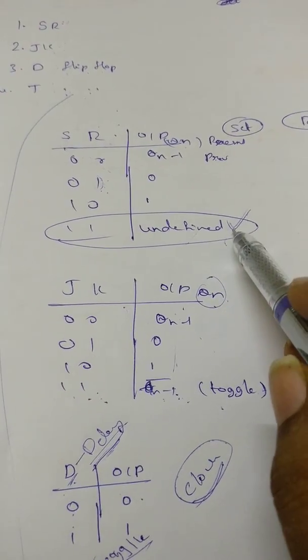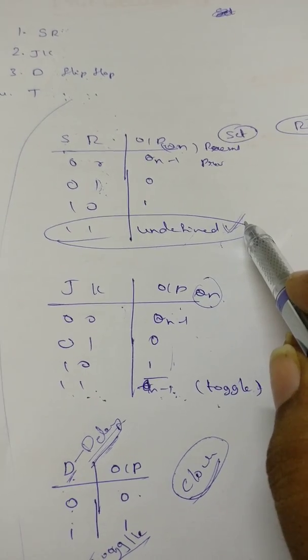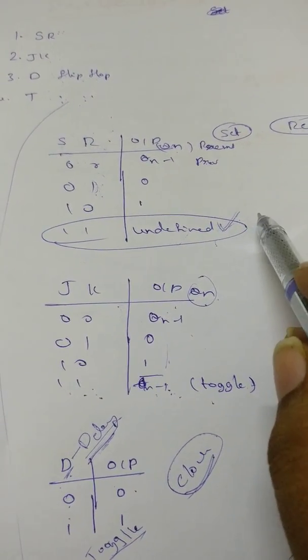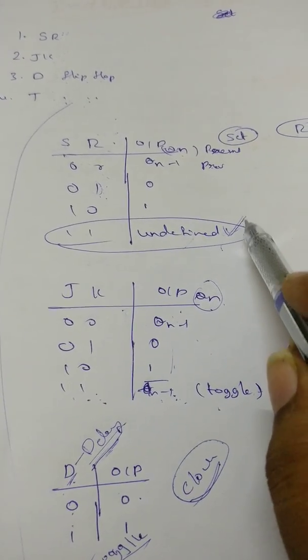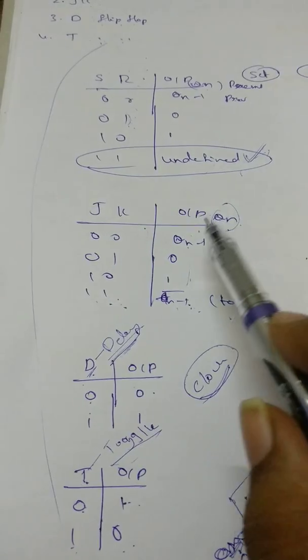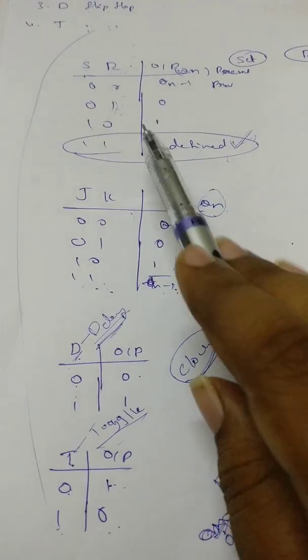But the undefined state is not okay in the electrical circuits you have used. So to avoid this case, JK flip-flop was developed. The first three cases are same as SR flip-flop.